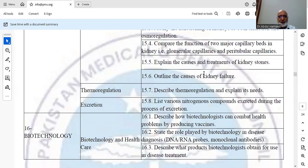Let's start with the new lesson covering the topic and unit of biotechnology. The learning outcome of this lesson is to describe how biotechnologists can combat health problems by producing vaccinations. This is the first learning outcome from this main biotechnology topic or unit.